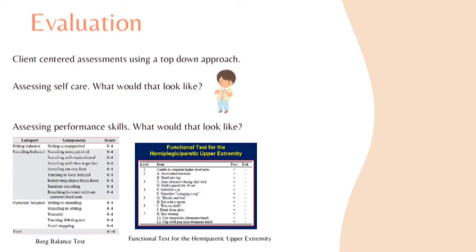For evaluation, you want it to be client-centered, using a top-down approach. For example, if you wanted to assess self-care with a client, observation would be a big one — you would observe them donning and doffing their shirt and take notes. If you wanted to assess performance skills, there are many formal tests. Two that I picked out are the Berg Balance Test, scored from zero to four with different directions, and the Functional Test for Hemiplegic Upper Extremity. You just have to pick which one works best for your patient.